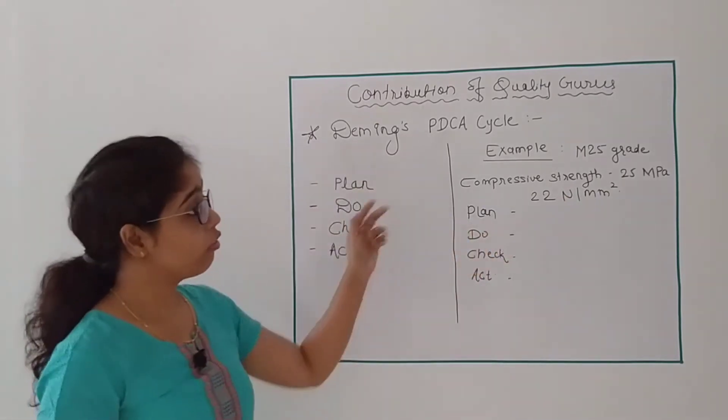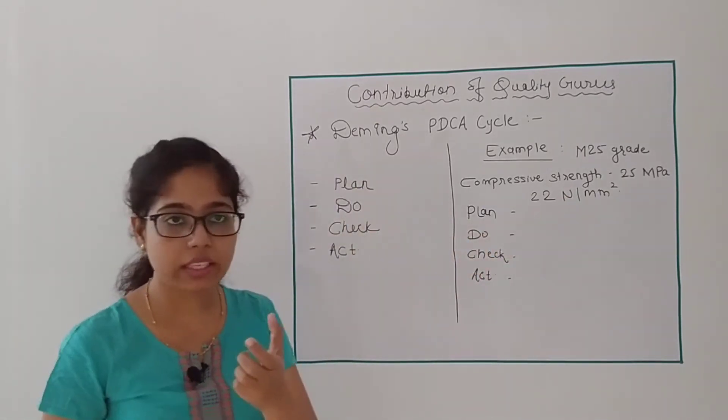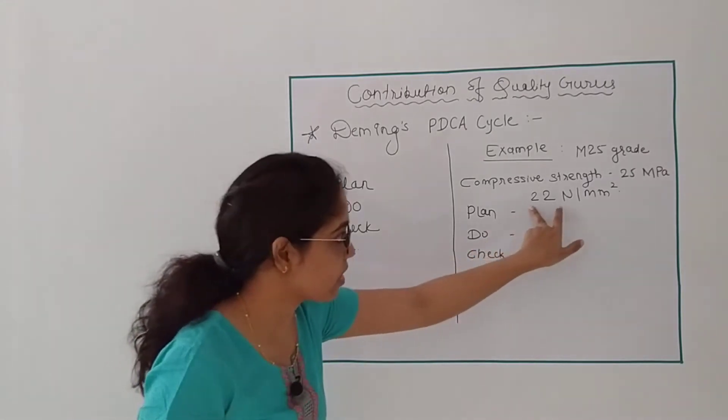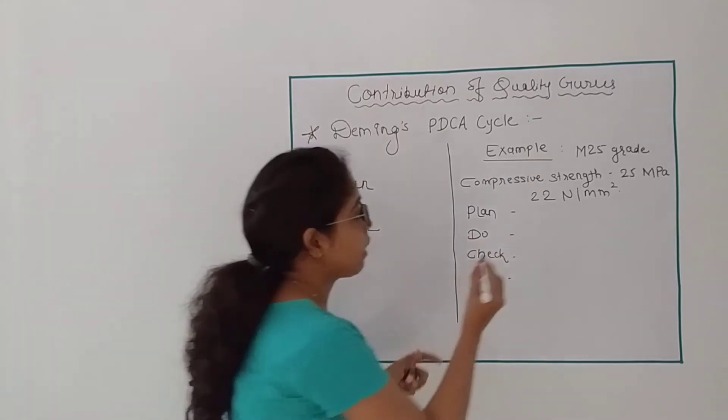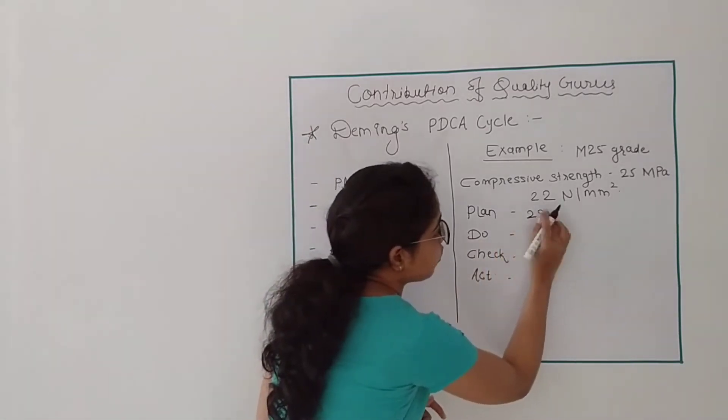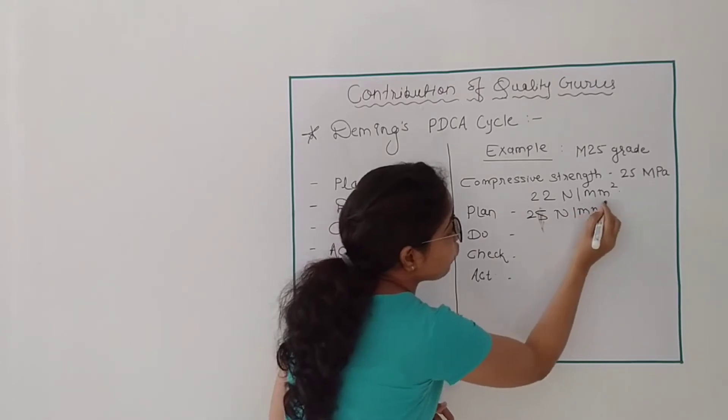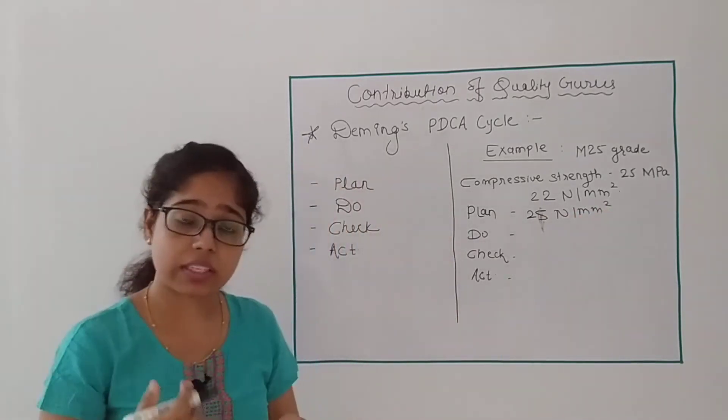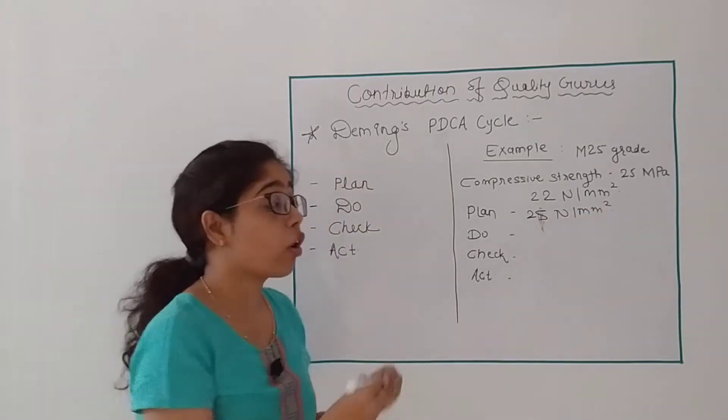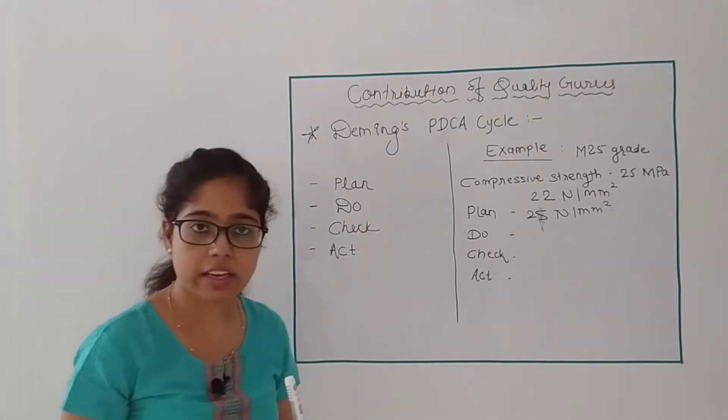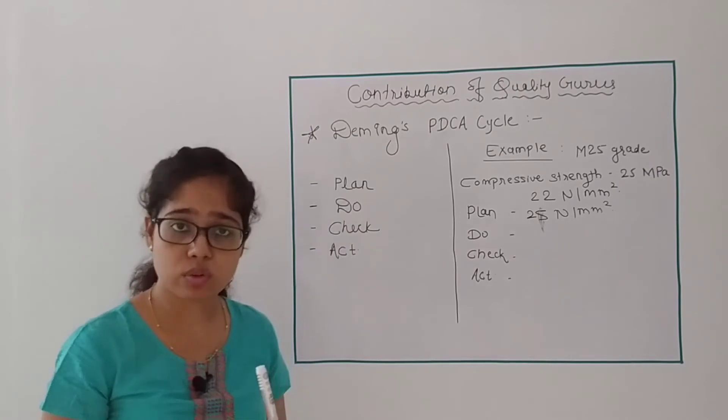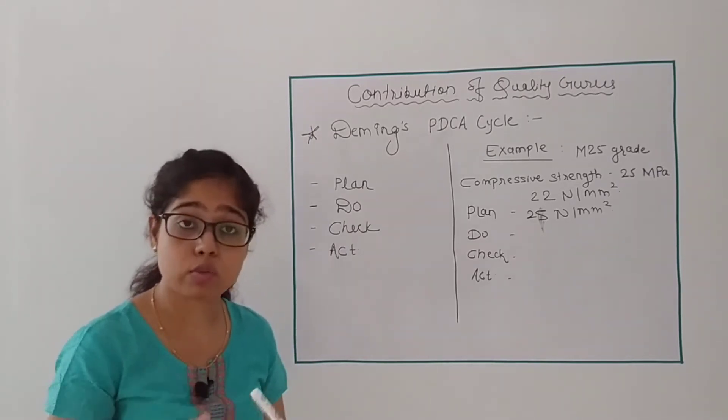First, I will identify the problem. My target is to achieve 25 N per mm square. To reach this grade, I will identify what materials are needed to make concrete: cement, fine aggregate, coarse aggregate, and water in the proper ratio.